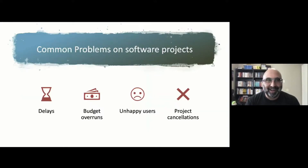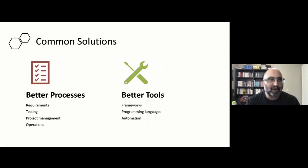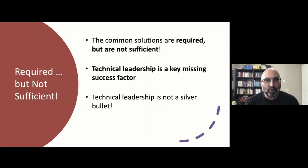If we start looking at our applications that we build, we usually find that our apps and projects suffer from four typical problems. I'm sure you've been on projects where there have been delays, budget overruns, unhappy users, and project cancellations. As an industry, we've mostly focused our efforts on two broad categories: we've improved our processes tremendously over the years, and we've had huge new tools come to fruition. Improving our tools and our process is super important — it is required — but in my mind, it's not sufficient. It's important to talk about what we can do as individuals on these projects to improve our technical leadership.